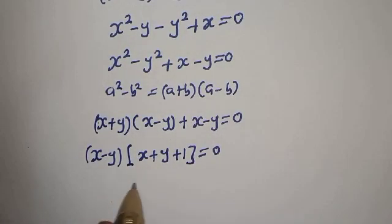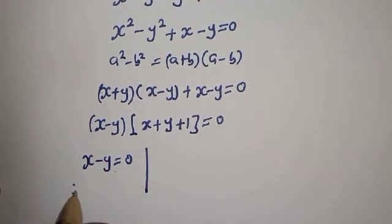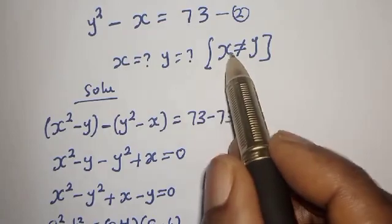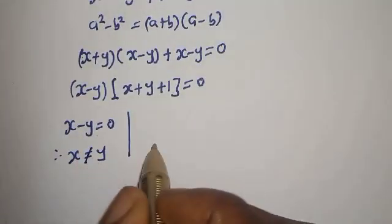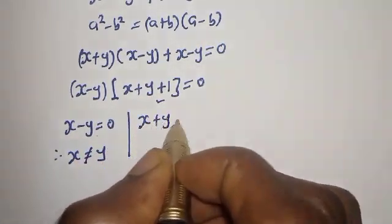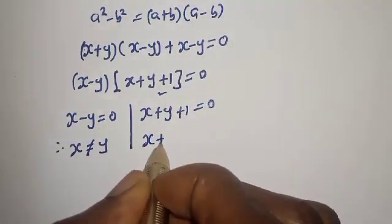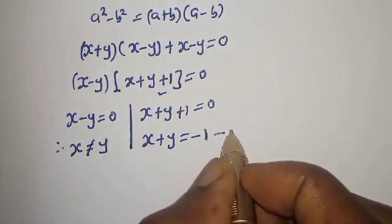There are two cases here. The first case is x minus y is equal to 0, so x is equal to y. But from the definition we know that x is not equal to y, so we discard this case and consider the second case. The second case is x plus y plus 1 is equal to 0, giving x plus y is equal to minus 1. Let's call this equation 3.